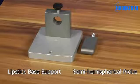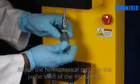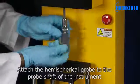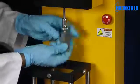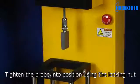Here you see the individual parts of the accessory. To set up the test, attach the hemispherical probe to the probe shaft of the instrument. Tighten the probe into position using the locking nut.